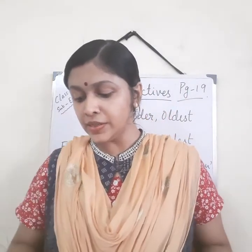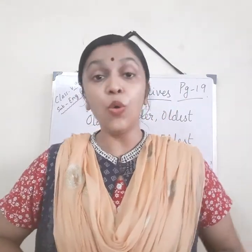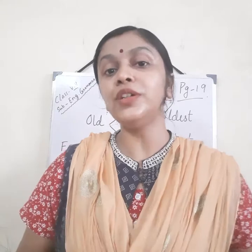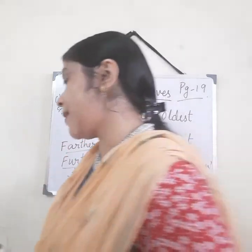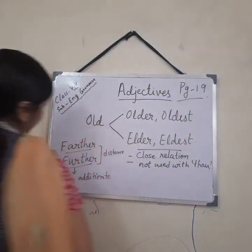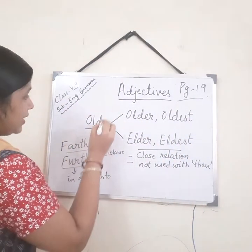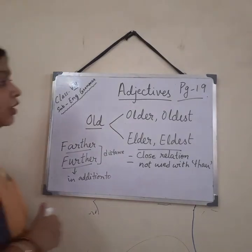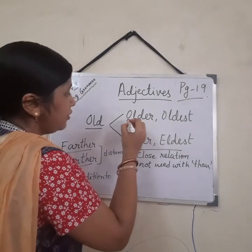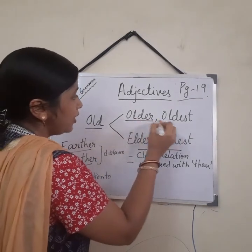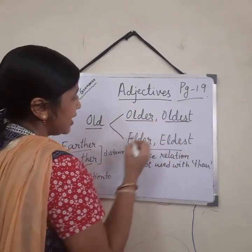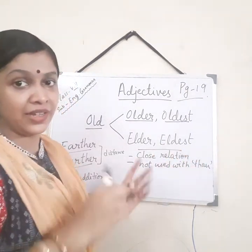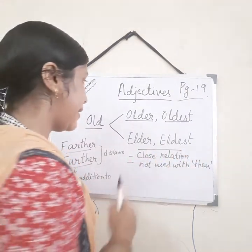So first let us start with 'old'. The two forms of the degrees of comparison we use with old — this is the positive or the root word. From there: older, oldest, as well as elder, eldest. These forms are there.